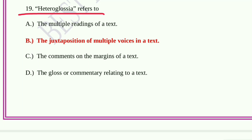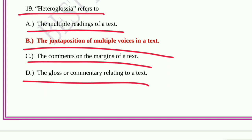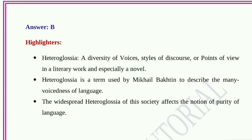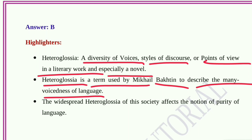Question number nineteen: Heteroglossia refers to option A, the multiple reading of a text; option B, the juxtaposing of multiple voices in a text; option C, the comments on the margin of a text; option D, the gloss or commentary related to a text. Option B, the juxtaposition of multiple voices in a text, is the correct answer. Heteroglossia, a diversity of voices, styles of discourse, or points of view in a literary work, especially a novel, is a term used by Mikhail Bakhtin to describe the many voices of language.